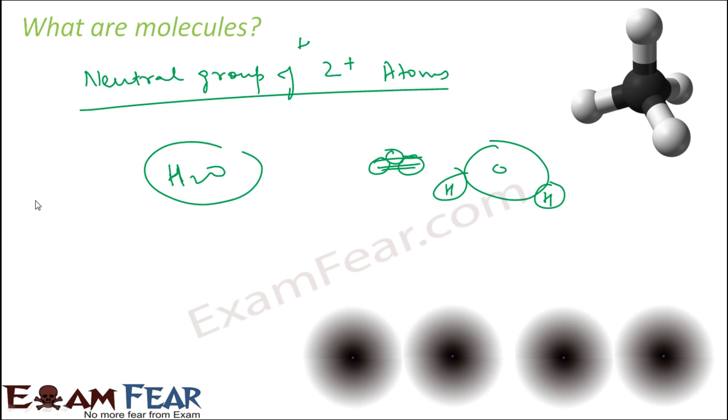And when we talk about the ions, we will talk about these things in detail. Just understand these terms now. They have charge. For example, Cl minus, SO4 2 minus. They have charge. We will talk about these things in detail.